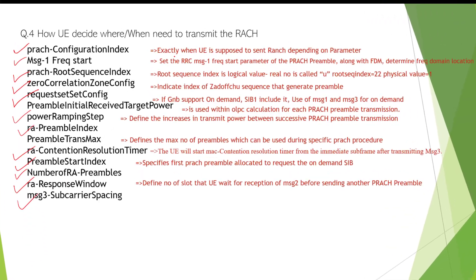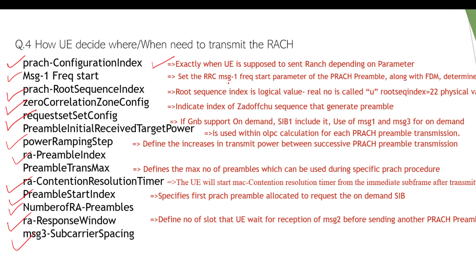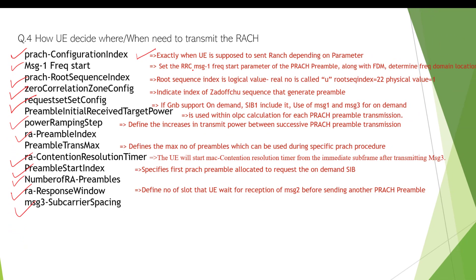The PRACH config index gives the time domain locations — exactly when the UE is supposed to send the RACH. From the PRACH config index, we know the slot number, SFN number, and sub-frame number — exactly where the UE needs to send the RACH. Message 1 frequency start gives the frequency domain location. The RRC Message 1 frequency start parameter along with FDM determines the frequency domain location. Once you have both time and frequency domain locations, you know where the preamble is being sent.